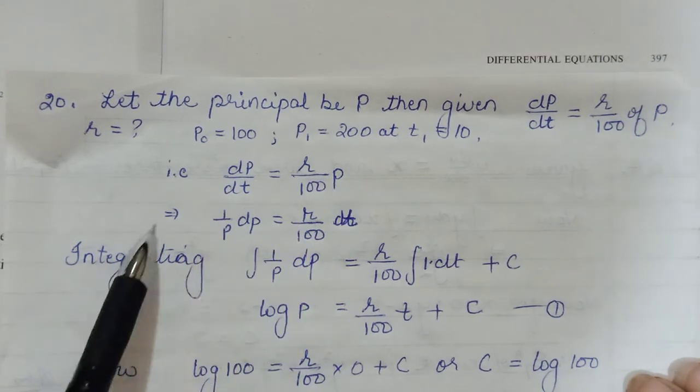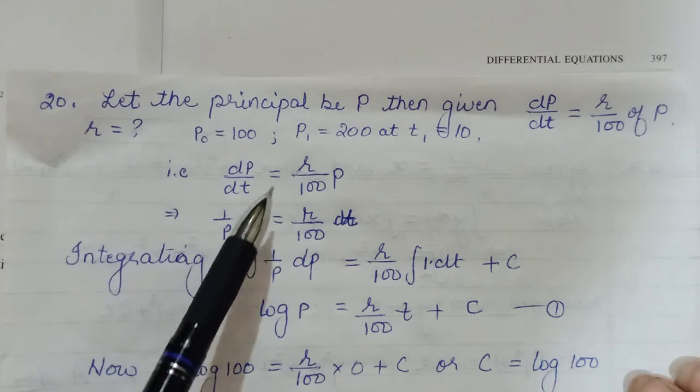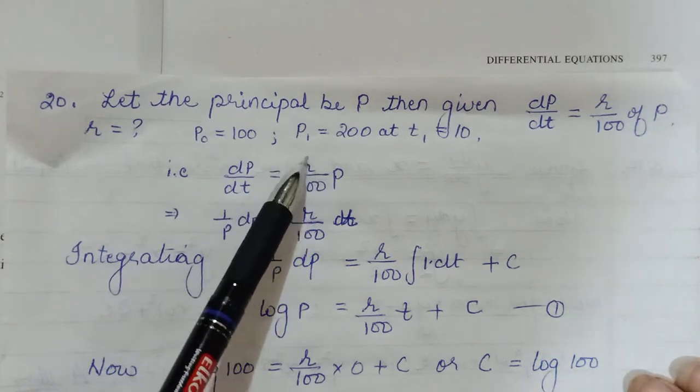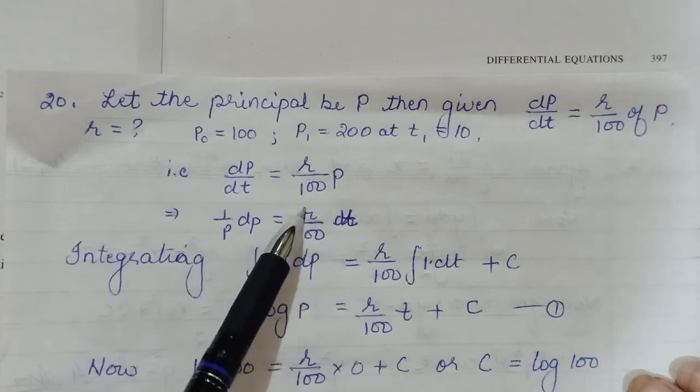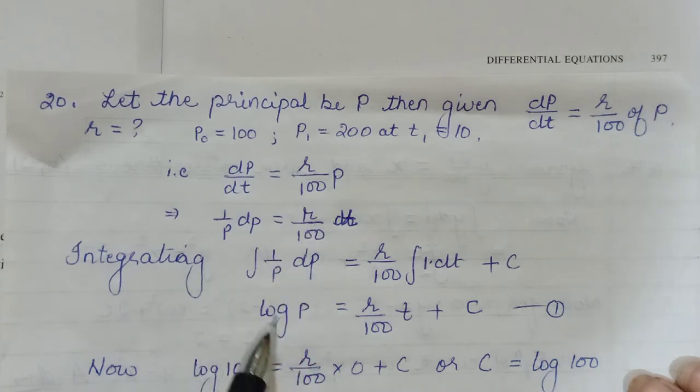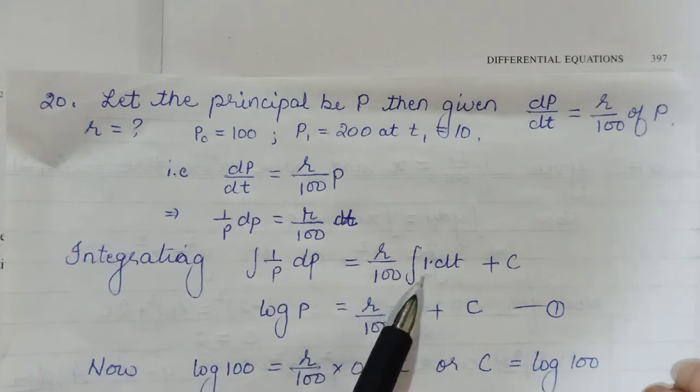We have dP here, this P will be taken to left hand side. So 1/P dP, and R will be constant, rate remains constant. So R is actually an arbitrary constant here. R/100 dt, if you integrate this becomes log P, and this will give you t.